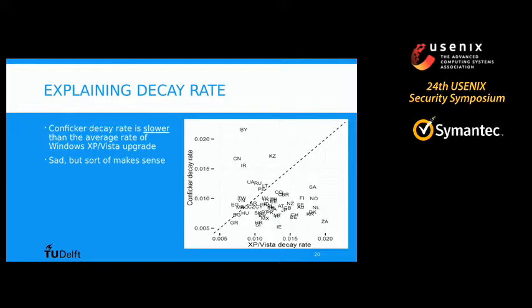How does the decay rate compare with the change or upgrade rate of Windows? Because if you change your machine or upgrade to Windows 7, it kind of automatically gets rid of Conficker. Each point on this graph represents one of the countries. On the x-axis is the decay rate of Windows XP and Vista, and on the y-axis is the Conficker decay rate. In all the countries below this dotted line, the decay rate of Conficker is even slower than the typical rate at which machines get changed or upgraded. This is sad in some ways, but it makes sense — it tells you something about who this group of people is who still remain infected with this worm after so many years. This same group is probably also the group that changes their machines the least frequently.